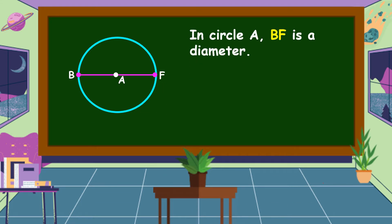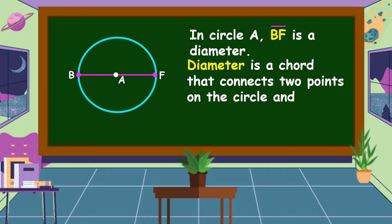In circle A, line segment BF is a diameter. What is a diameter? Diameter is a chord that connects two points on the circle and passes through the center of the circle.